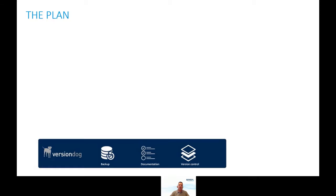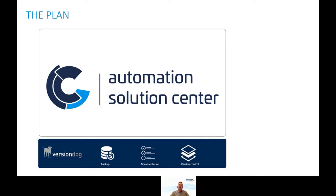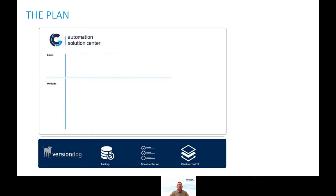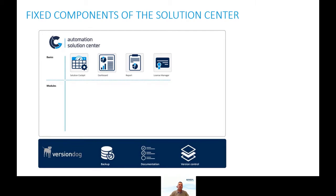What is the Automation Solutions Center? We created a plan. It contains several modules. There are some basic modules. One module is called Solution Cockpit — it has a dashboard and a report generator. And of course a license manager to license all new functions and products we are developing. For the VersionDoc product itself, we always get feedback that we should do more in reporting, not just backup and compare of devices — the reports should be better, more flexible, and web-based.